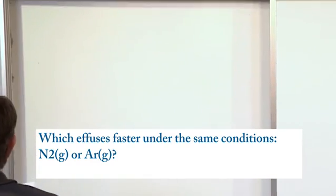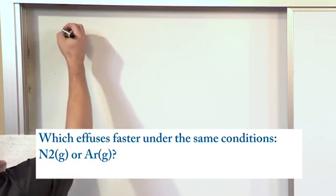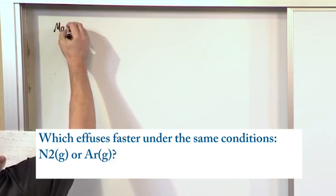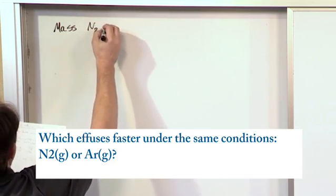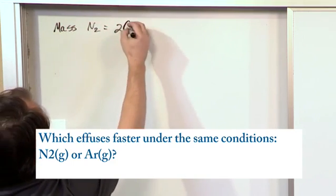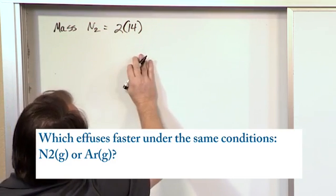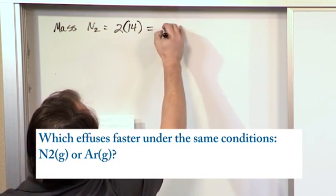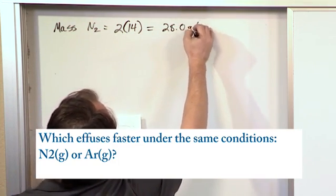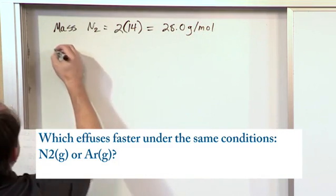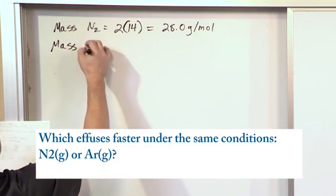And specifically, we know from this problem that the molar mass of nitrogen gas is 2 times, because of the 2 here, 14 with some rounding there. So, you can say 28.0 grams per mole.